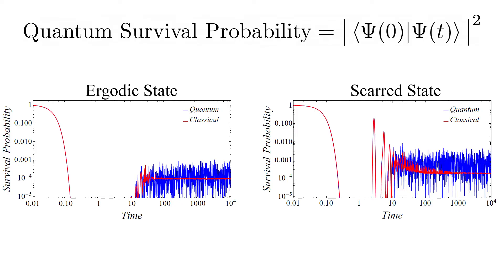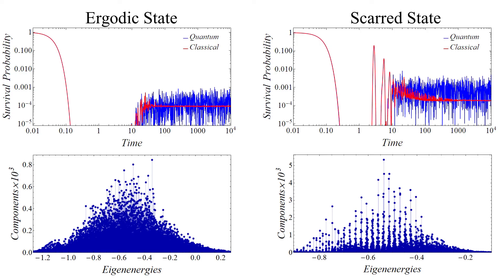These different behaviors of the survival probabilities can be traced back to structures in the energy distribution of the coherent states when expanded in the Hamiltonian eigenbasis. This distribution is called the local density of states. We show the components of the previously shown initial states in the eigenbasis.